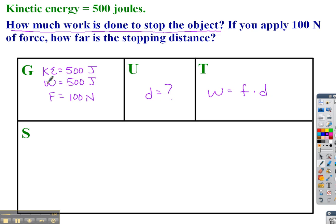So I'm going to take that formula, I'm going to take what I'm given here, and I'm going to just plug and chug. I get 500 joules of work equals 100 newtons of force times D.